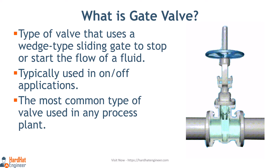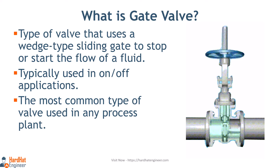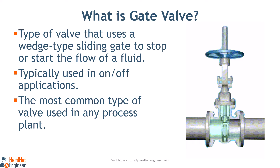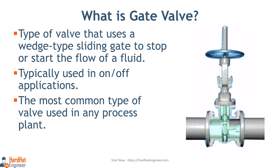It is a linear motion valve used to start or stop fluid flow in service. The valve position is either fully open or fully closed. When the gate valve is fully open, the disc is completely removed from the flow, therefore it virtually has no obstruction to flow, as you can see in the animation. Due to this, very little pressure drops across the valve when fluid passes through it.